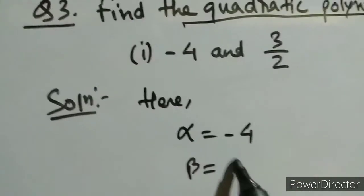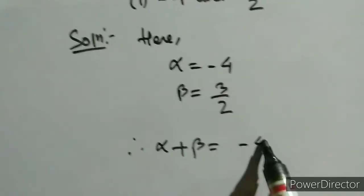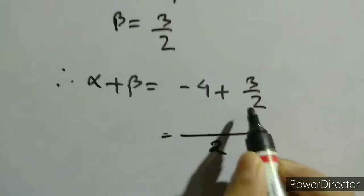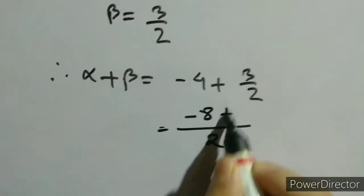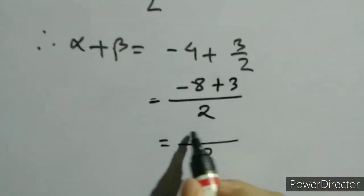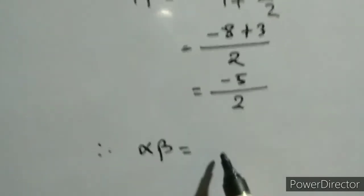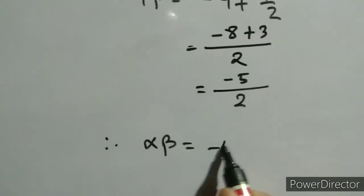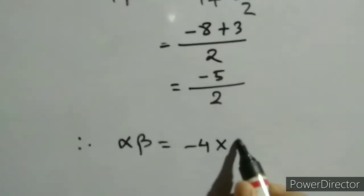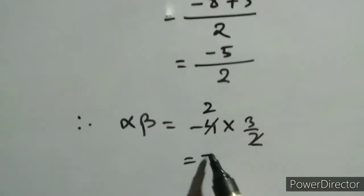For part 1, alpha equals minus 4 and beta equals 3 by 2. Therefore alpha plus beta equals minus 4 plus 3 by 2. The common denominator is 2, so minus 8 plus 3 gives us minus 5 by 2. Now find the product of zeros: alpha times beta. Alpha is minus 4 and beta is 3 by 2. Reducing, 4 cancels with 2 to give 3 times 2 equals 6, so alpha times beta equals minus 6.